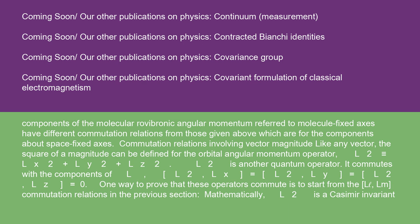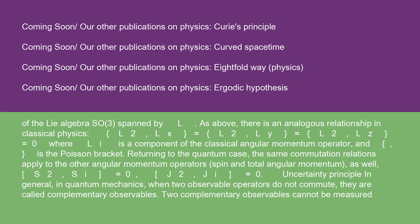Like any vector, the square of a magnitude can be defined for the orbital angular momentum operator: L² ≡ Lx² + Ly² + Lz². L² is another quantum operator, and it commutes with the components of L: [L², Lx] = [L², Ly] = [L², Lz] = 0. One way to prove this is to start from the [Ll, Lm] commutation relations. Mathematically, L² is a Casimir invariant of the Lie algebra so(3) spanned by L. There is an analogous relationship in classical physics. The same commutation relations apply to the other angular momentum operators: [S², Si] = 0 and [J², Ji] = 0.